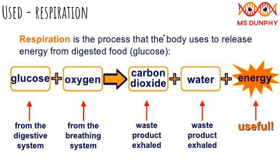Plants use some of the glucose they make for respiration. Respiration is a process which occurs in all living organisms. It's where energy is released from the breakdown of glucose. Plants use this energy to convert the rest of the glucose into various other useful substances, which they can use to build new cells and grow.